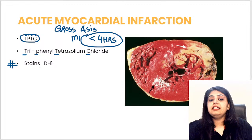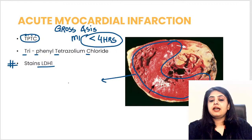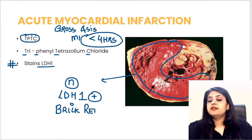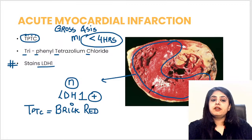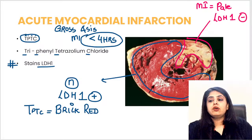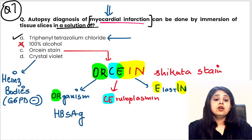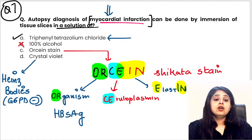TTC has four alphabets and is useful for gross diagnosis of myocardial infarction within four hours of death — four alphabets, four hours. The principle: TTC stains LDH1, and the heart is rich in LDH1. Normal tissue stains brick red because LDH1 is present. The infarcted area appears pale because cells have died, LDH1 is gone, and no red color forms with TTC.